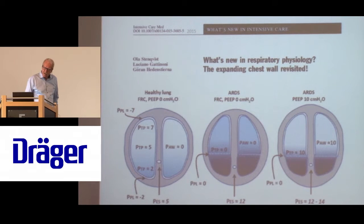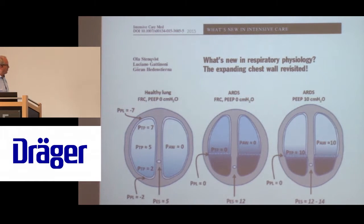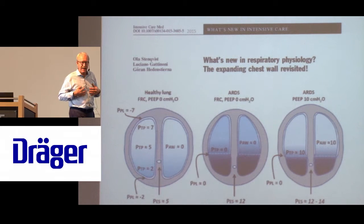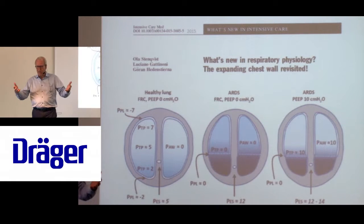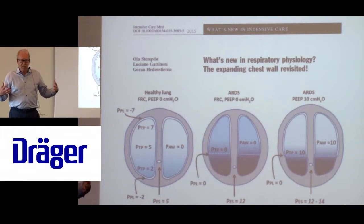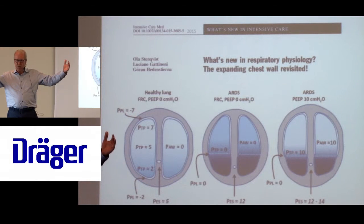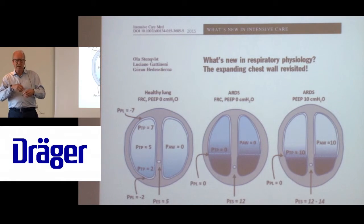Some months ago I had the opportunity to write an article together with Gattinoni and Göran Hedenstierna in Uppsala, reintroducing the fact that the ribcage has an enormous role to play in how gas is distributed. At FRC, when we are in the situation we are now, at end expiration there is a balance between the ribcage striving outwards and the lungs trying to recoil. That's why we have the negative pleural pressure, which is what keeps the lung open at FRC. If we didn't have the ribcage trying to hold up the lung, we would collapse.